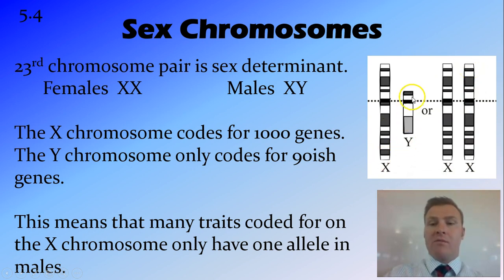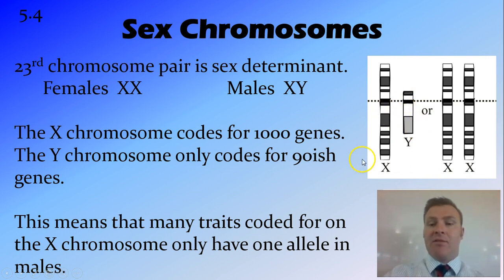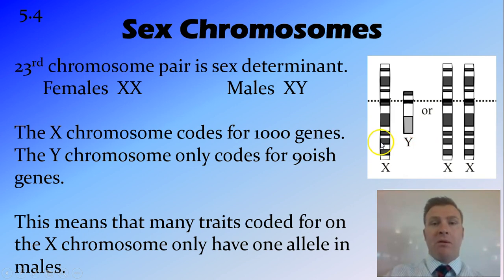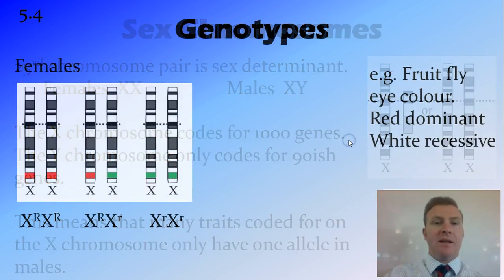The Y chromosome is much smaller and codes for less than 100 traits. This means that if a trait is coded on the X chromosome — referred to as an X-linked trait — there are going to be about 900 genes there that don't have a second allele on the Y chromosome, which is going to cause problems, as we'll see now.